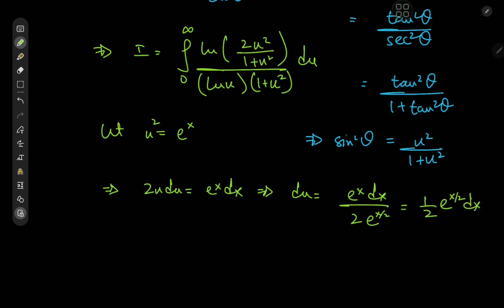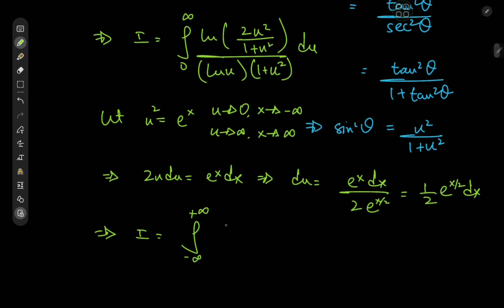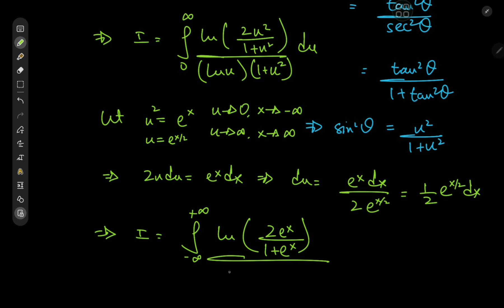As for the limits: as u → 0, eˣ → 0, so x → −∞; and as u → ∞, x → +∞. So the target integral I becomes the integral from −∞ to +∞. In the numerator we have log(2eˣ/(1 + eˣ)), in the denominator we have log u = x/2, and the differential element gives a factor of eˣ/²/2. The 1 + u² denominator becomes 1 + eˣ.